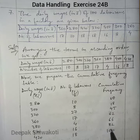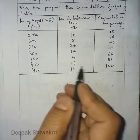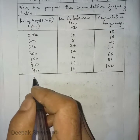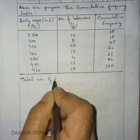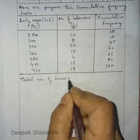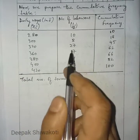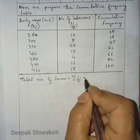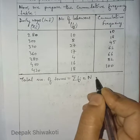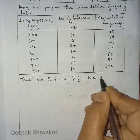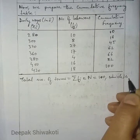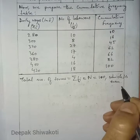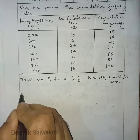This cumulative frequency table will help us find the median of the wages. The total number of terms is equal to the summation of Fi, which is 100 — represented by capital N. N equals 100, which is even. So we use the formula for an even number of observations.